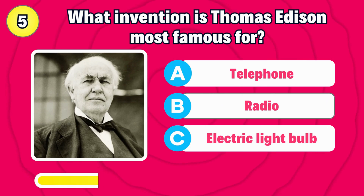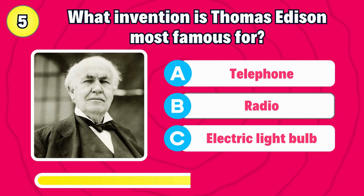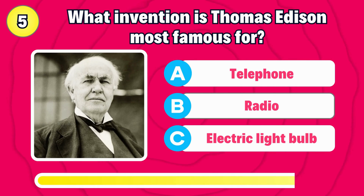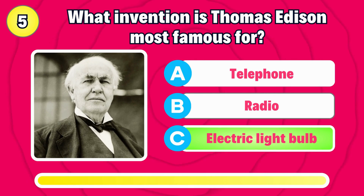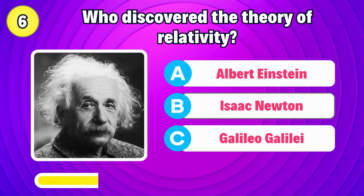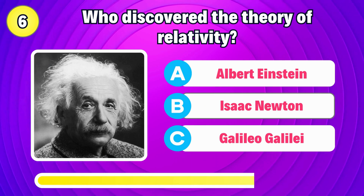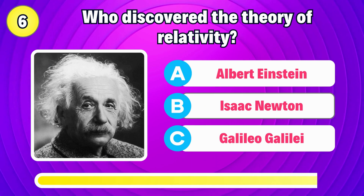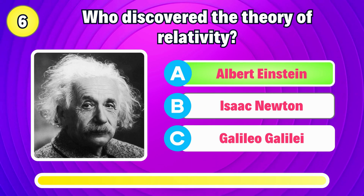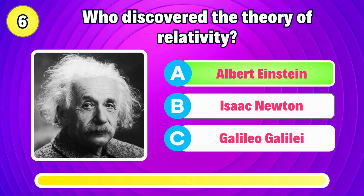What invention is Thomas Edison most famous for? Right, it's the electric light bulb. Who discovered the theory of relativity? It's discovered by Albert Einstein.